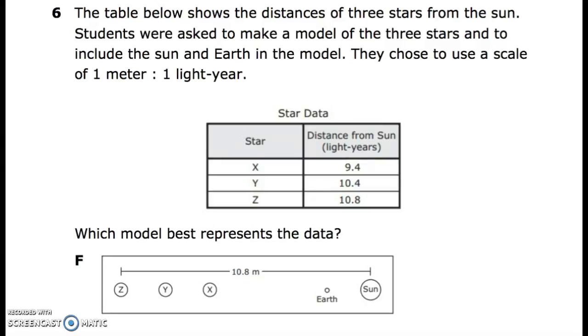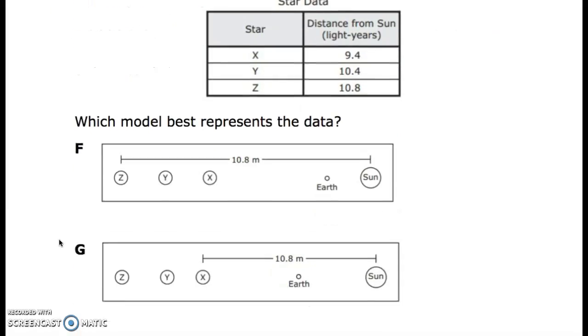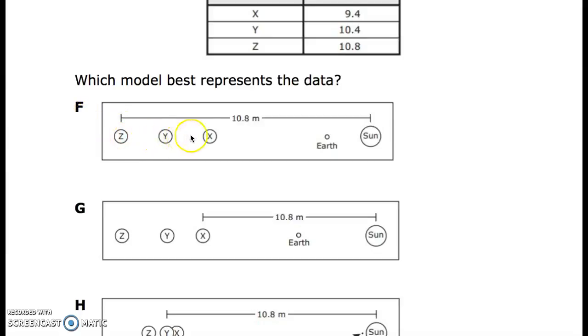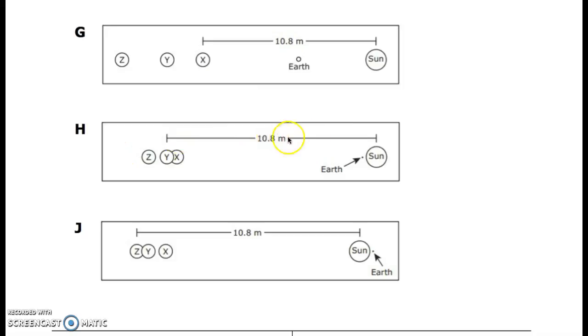Six. The table below shows the distances of three stars from the sun. Students were asked to make a model of the three stars and include the sun and Earth in the model. They choose to use a scale of one meter to one light year. So here's your star X, Y, Z, and here's your distance from the sun in light years. Which model best represents the data? So your first one is F, Z, Y, X. Here's the Earth and the sun. G, Z, Y, X, the Earth and the sun. H, changing the distance of this line each time. So check this, and then check your Earth and sun placement. And finally J, Z, Y, X. Again, 10.8 meters, and Earth and sun.